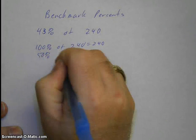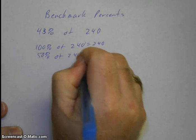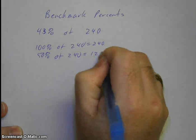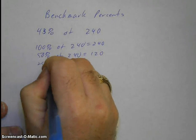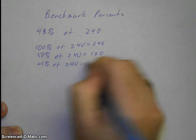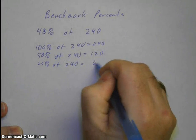50% of 240, that's half, so it's 120. 25% of 240, that's half of 50, so that's 60.